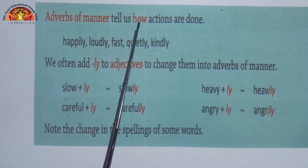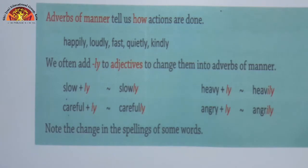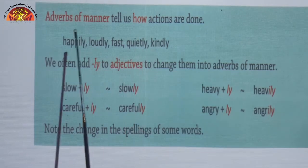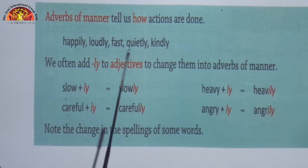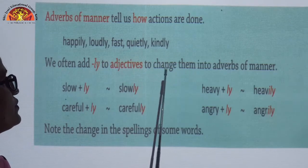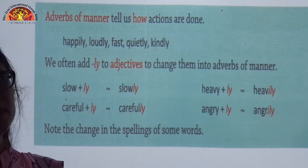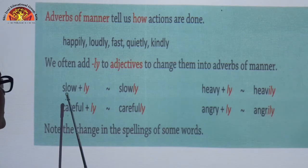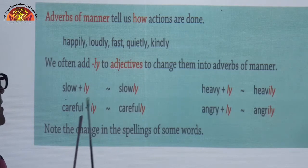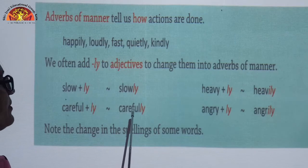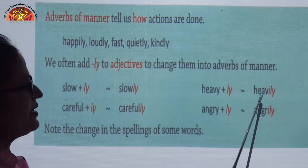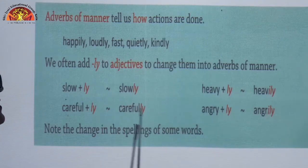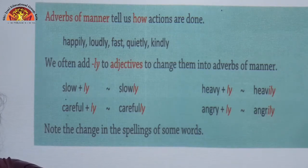Adverb of manner tells us how actions are done. Examples: happily, loudly, fast, quietly, kindly — these words show how an action is done. We often add -ly to adjectives to change them into adverbs of manner. For example: slow becomes slowly, careful becomes carefully, heavy becomes heavily, angry becomes angrily. Very simply, we have converted these adjectives into adverbs of manner.